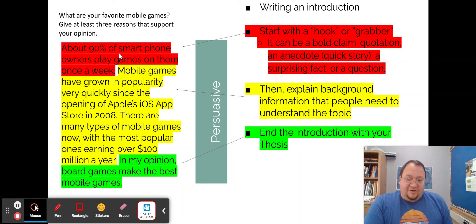Then, after the hook, you want to explain any background information that people need to understand your topic. So this topic is about mobile games, and so I did a quick look on mobile games, checked a few internet sites such as Wikipedia, just to get basic information. And I think, if I was reading this topic and I don't really know much about mobile games, what would be helpful to know? What would be useful for the people reading my article if they don't know much about the topic? And then you explain the information that will help them.